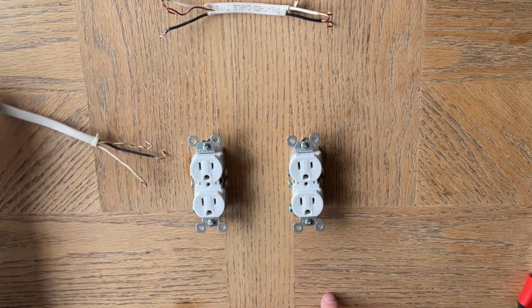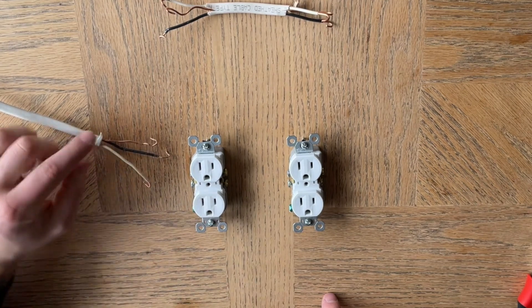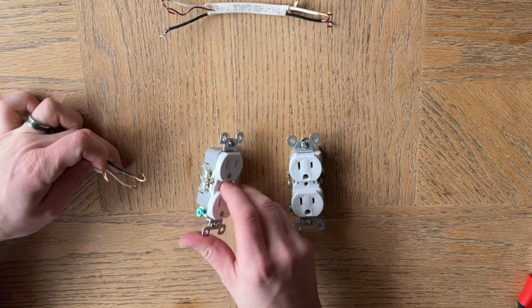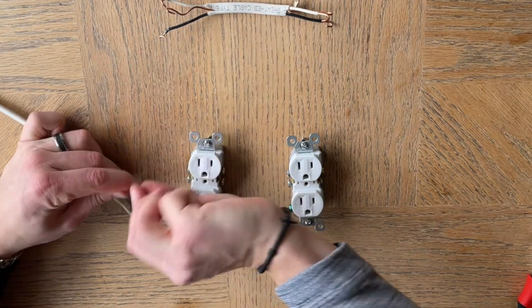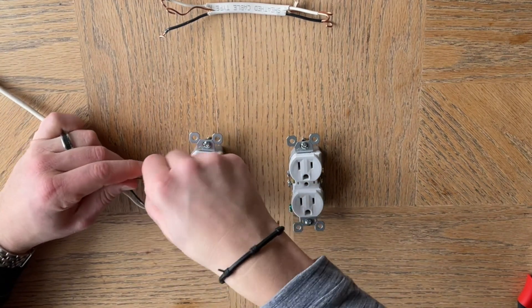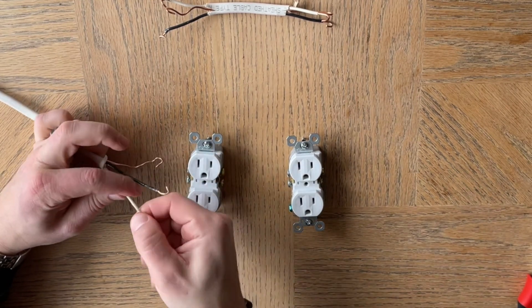Here we go. Coming in from the breaker, so this is the hot wire right here, hot line in. The ground obviously would go on the ground. I like to do that last. Neutral first is generally a better practice because then you don't get zapped.